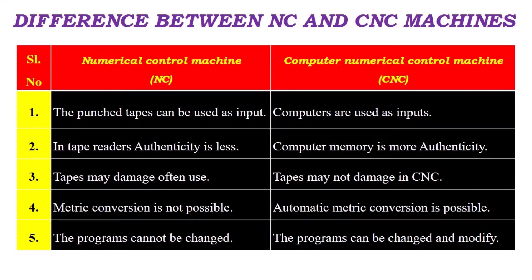Difference between NC and CNC machines. One: in NC machines, punched tapes are used as input; in CNC machines, computers are used as inputs. Two: in NC machines, tape readers have less authenticity; in CNC machines, computer memory has more authenticity.